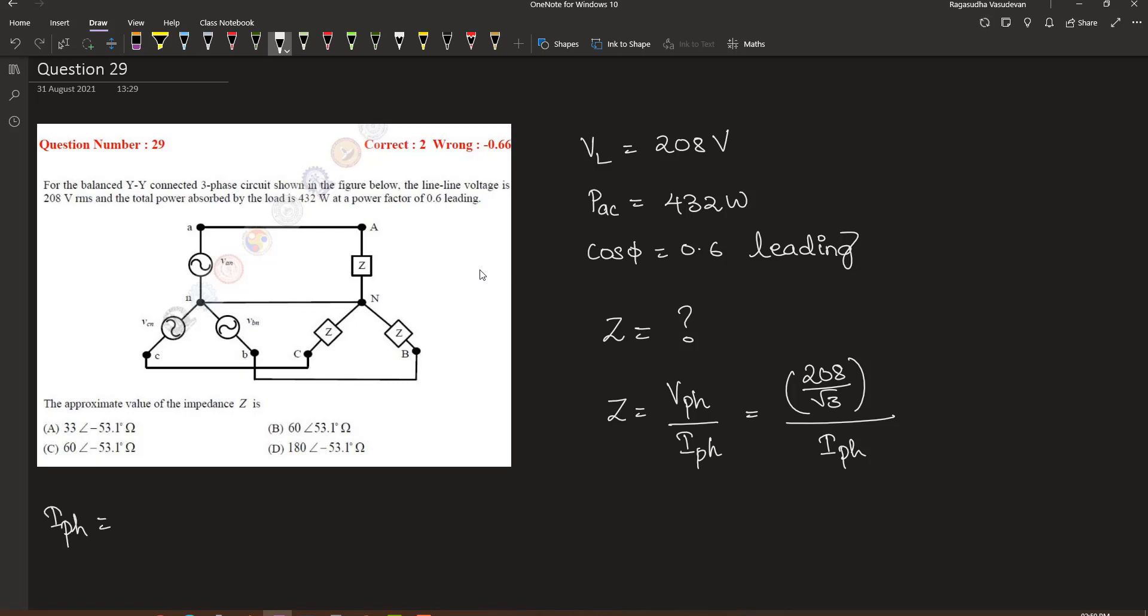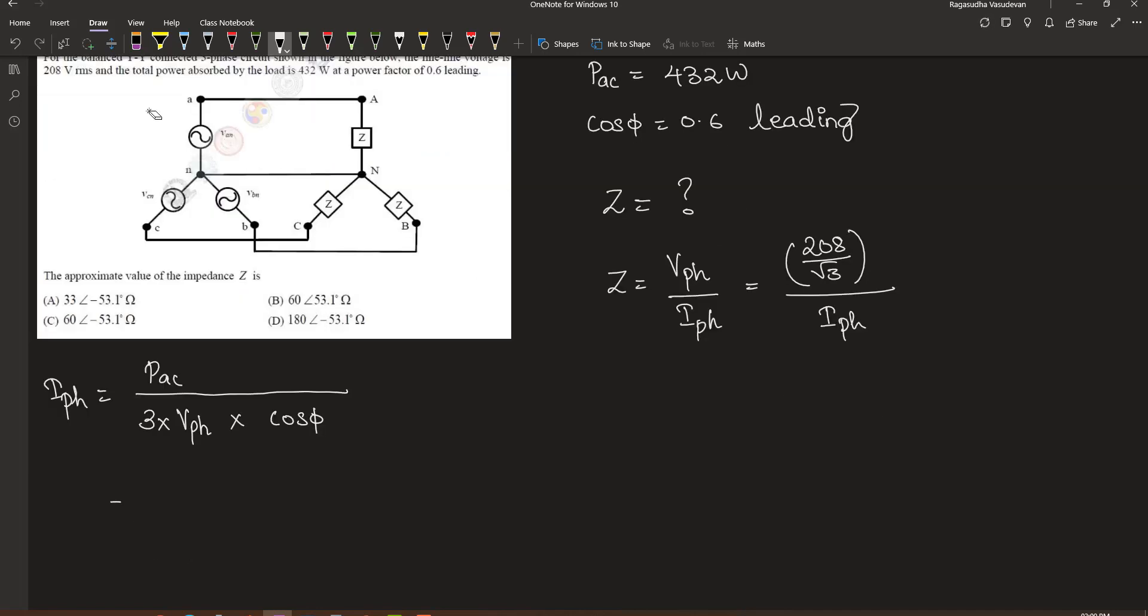The phase current is given by the active power divided by 3 into phase voltage into power factor cos phi. This current is equal to 432W divided by 3 into 208 by root 3 into 0.6. This will come somewhere close to 1.996A.